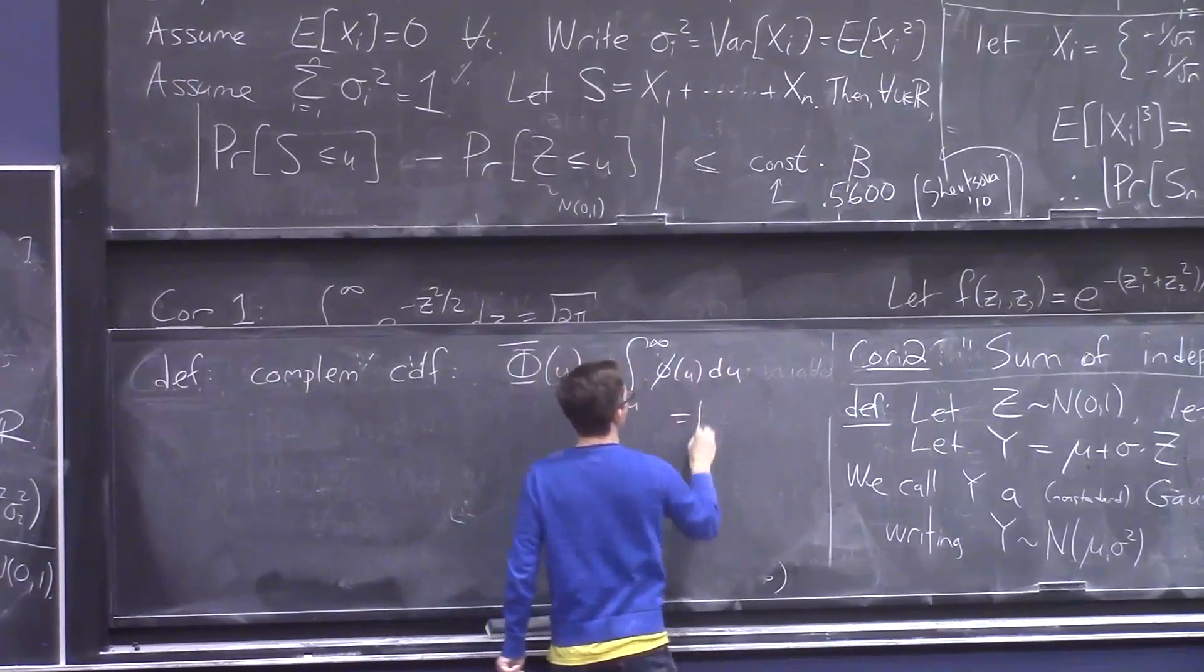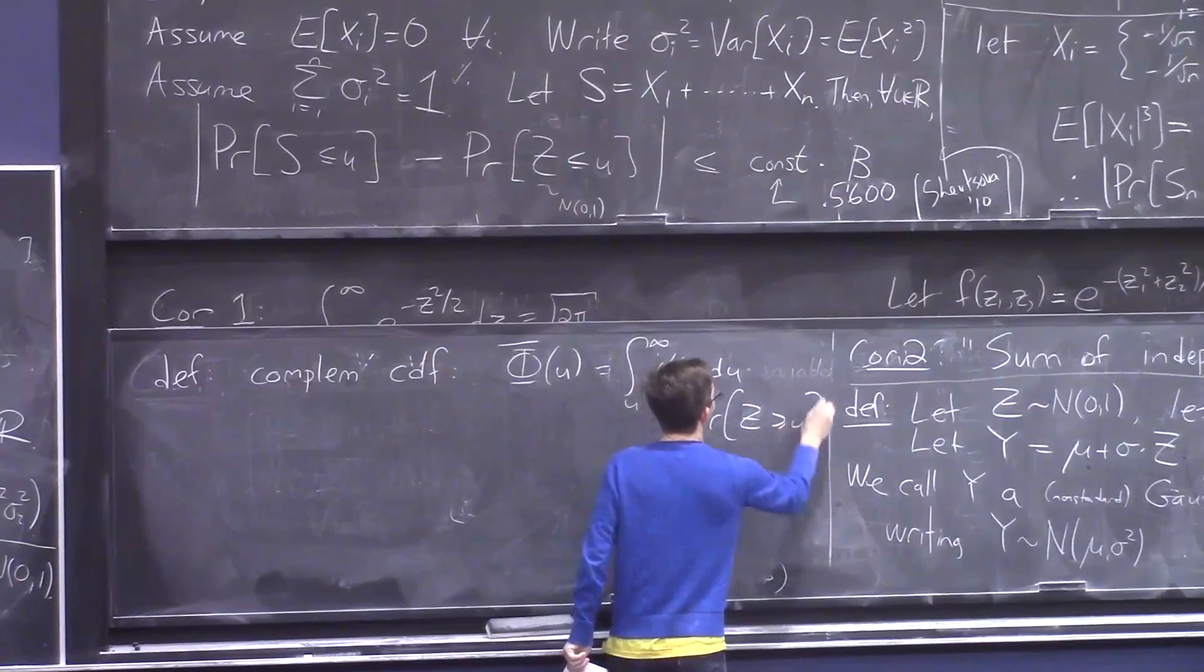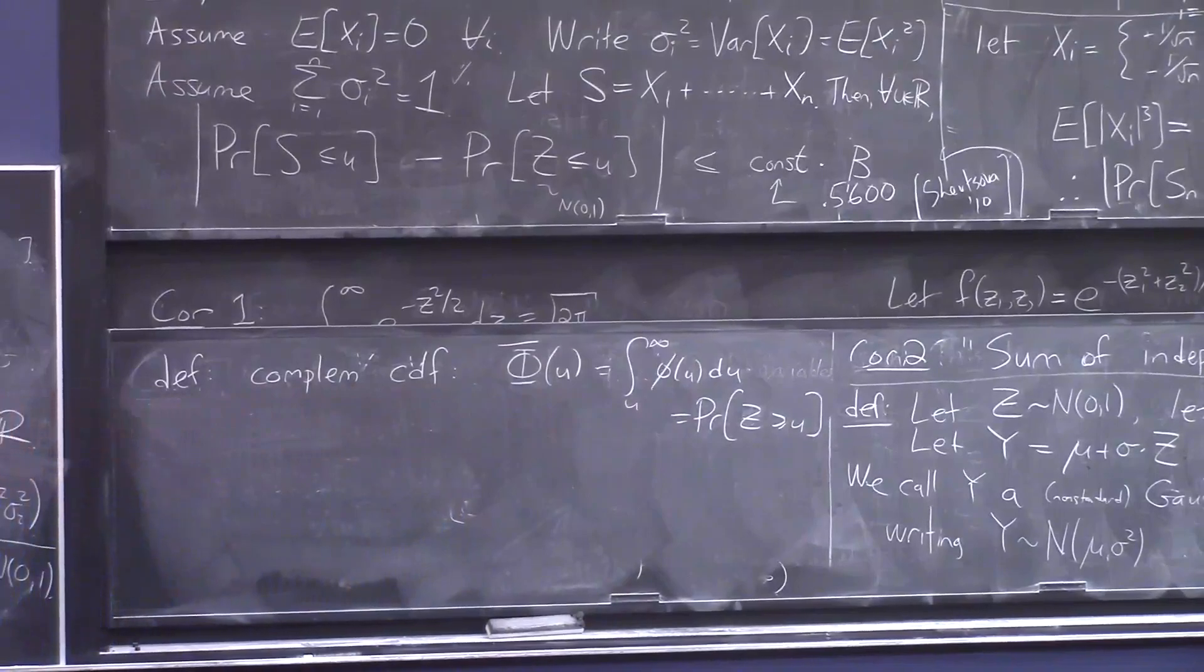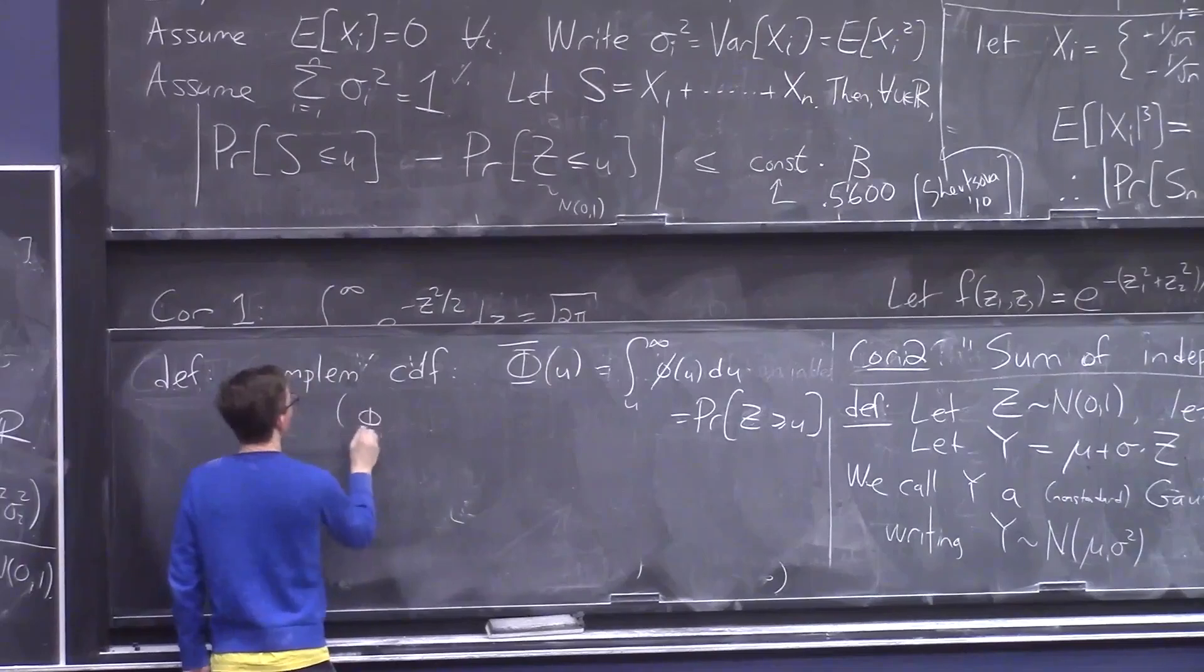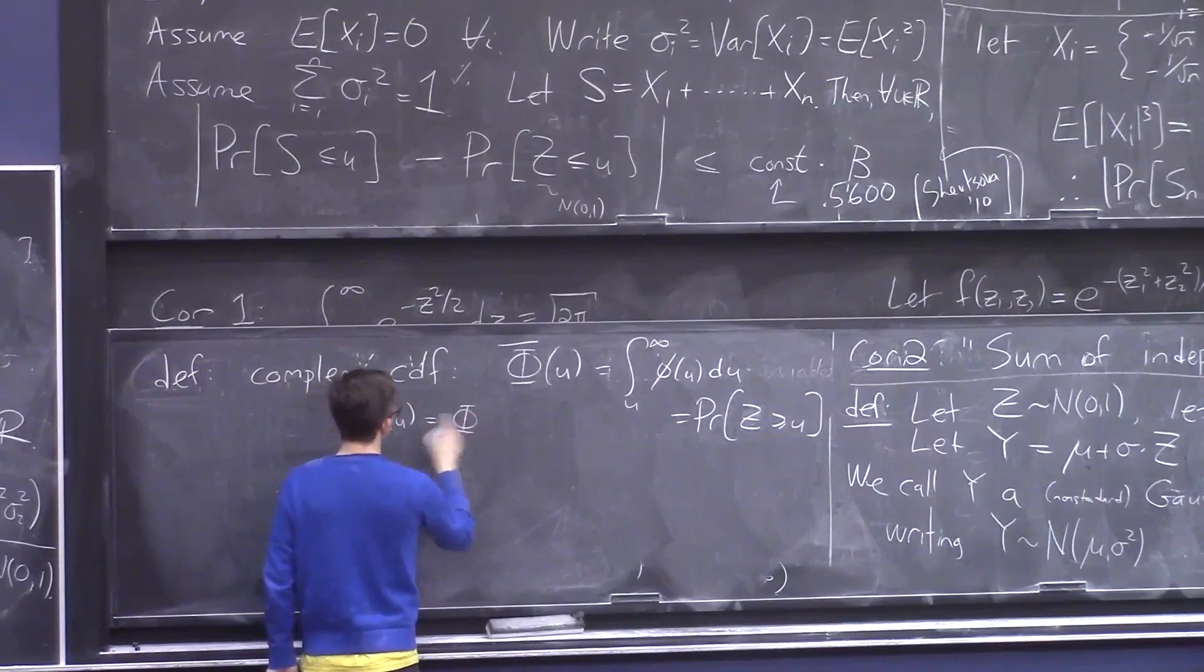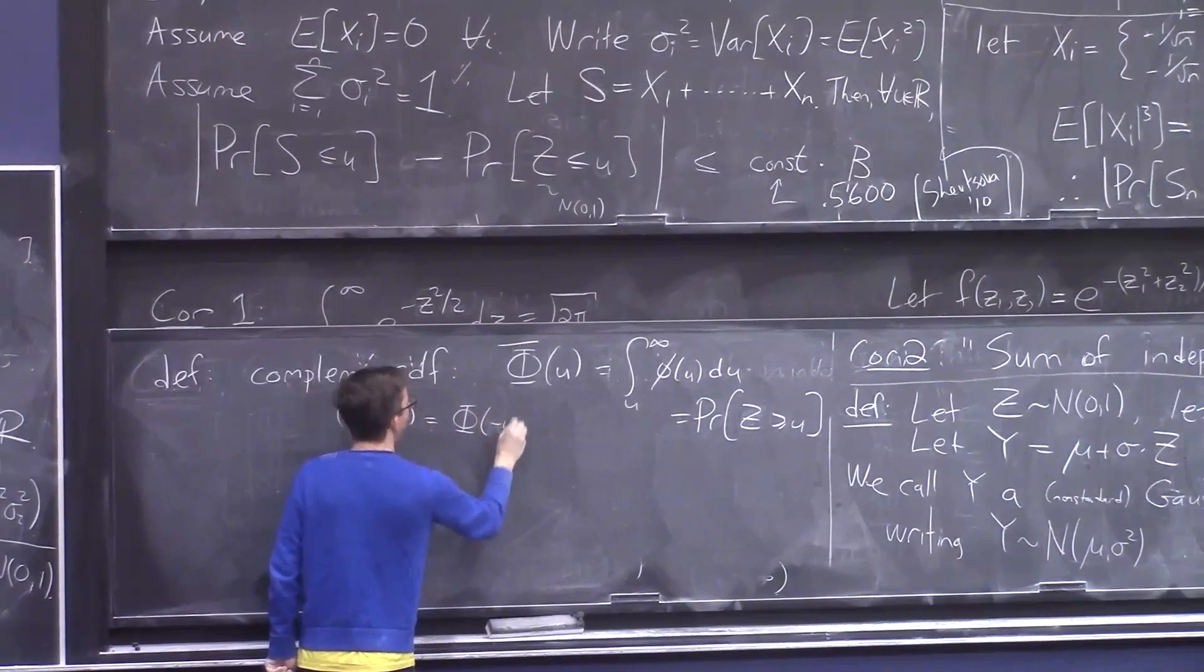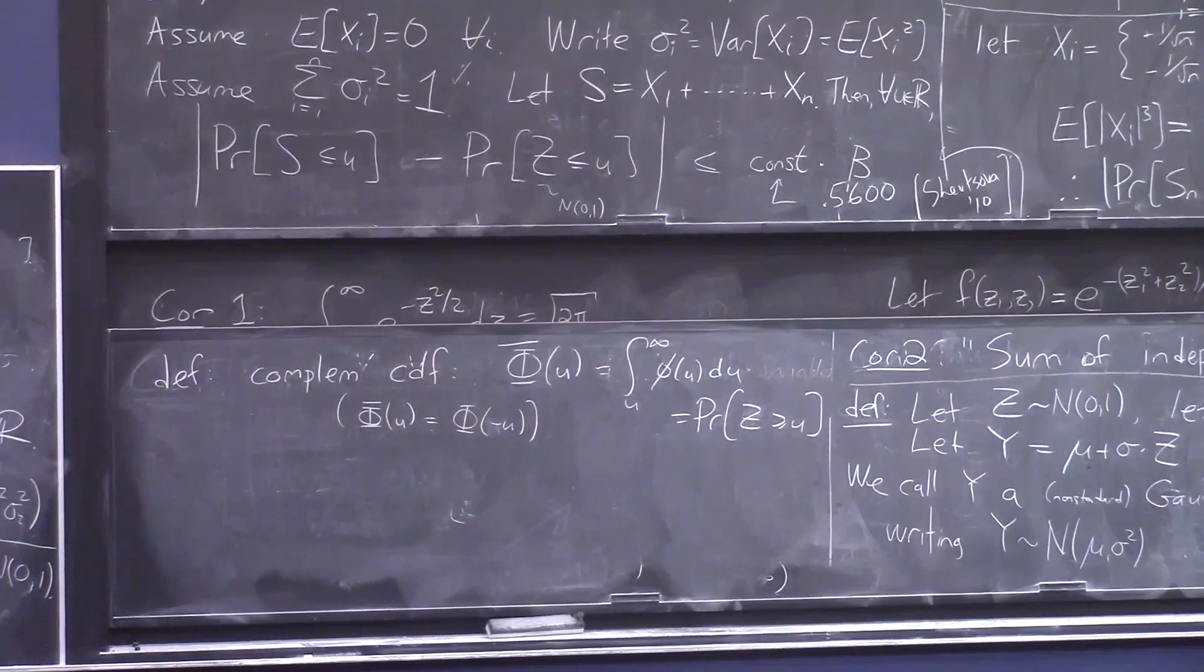It's the integral from u to infinity of φ of u, which is the probability that a Gaussian is bigger than u. Somehow this is, like, nicer to work with. It's basically the same thing. By symmetry, Φ of u is the same as Φ̄ of u is the same as Φ of minus u. The probability that z is bigger than u is the same as the probability that z is less than minus u.